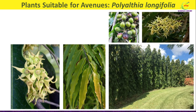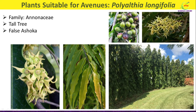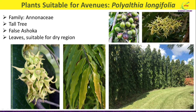The next plant suitable for avenues is Polyalthia longifolia, belonging to family Annonaceae. As you can see in this photograph, Polyalthia is a tall evergreen tree growing 10 to 15 meters in height. It is commonly called false ashoka or mast tree. It is an elegant, erect-growing tree with shining lance-shaped bright green polished leaves and drooping branches. The tree is suitable for dry regions, needs very little attention, and can grow in any kind of soil. If planted close to each other, the trees form a high screen.